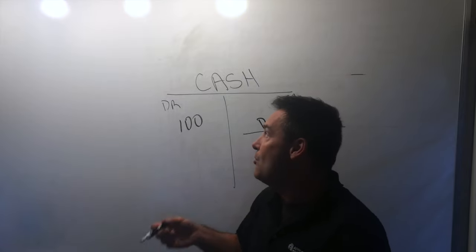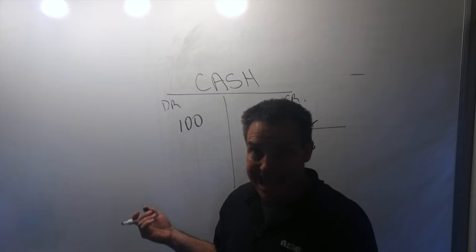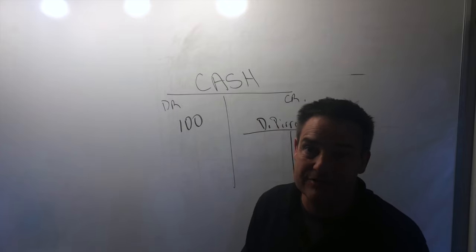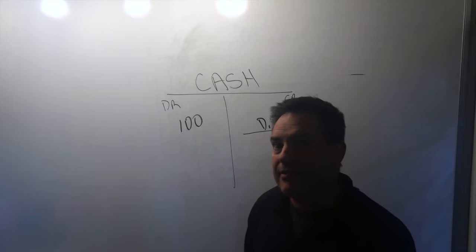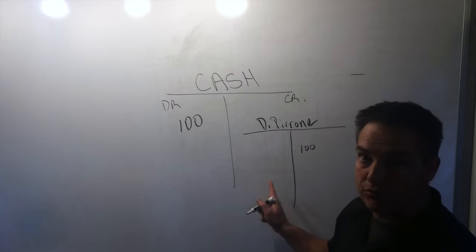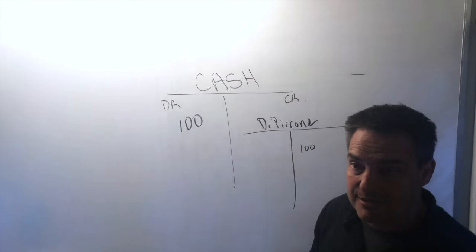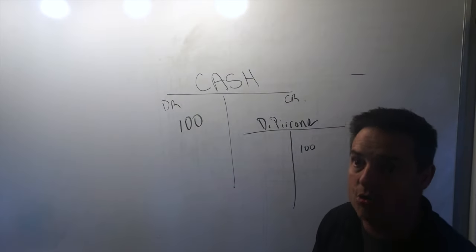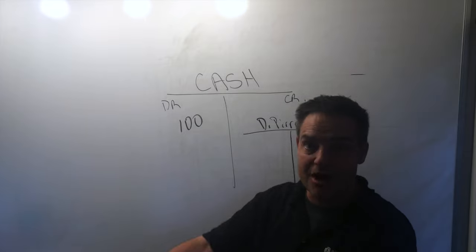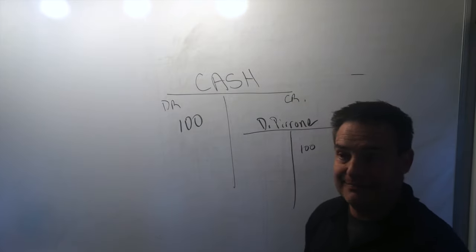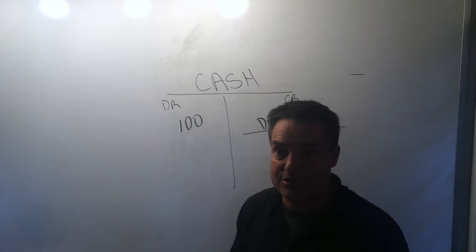Now, the question is, of course, we know what type of account cash is. Cash is an asset account. So then what type of an account is David Perron's account? And the answer is it's a liability. And the reason why it's a liability is because the bank owes David Perron $100. That money doesn't belong to the bank. It belongs to David Perron.